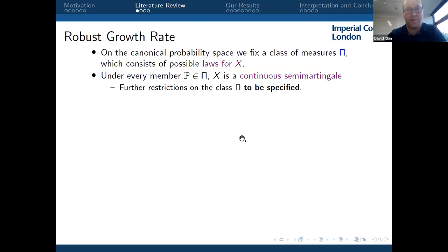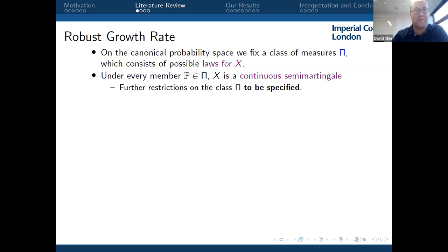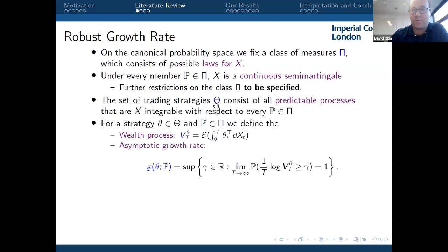In the mathematical framework, we fix a canonical probability space and look at a class of measures pi consisting of possible laws for the asset process X. Trading strategies theta are predictable X-integrable processes. For strategy theta and measure P, the wealth process is defined as a stochastic exponential of the integral. The quantity of interest is the asymptotic growth rate, depending on strategy theta and measure P — essentially the supremum of growth rates gamma such that log wealth divided by t exceeds gamma asymptotically.